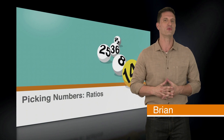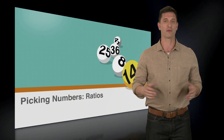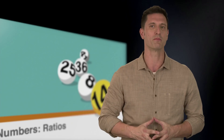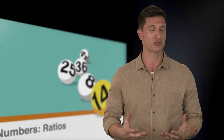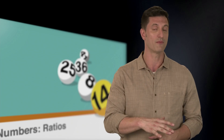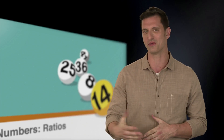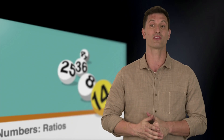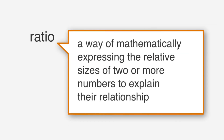So far, we've learned that we can use the picking numbers strategy to solve for a variety of problems. You already know that you can use the picking numbers strategy if you're looking for the relationship between two numbers. In this lesson, we will work on using this strategy to find the ratio between two numbers. A ratio is a way of mathematically expressing the relative sizes of two or more numbers to explain their relationship.